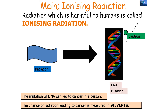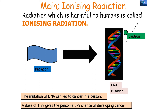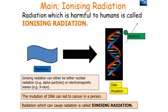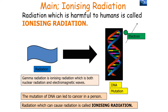The chance of radiation leading to cancer is measured in a unit called sieverts, which measures the risk of harm from exposure of the body to radiation. A dose of one sievert gives a person a 5% chance of developing cancer. Radiation that can do this includes gamma rays, x-rays, and UV rays. Ionizing radiation can either be nuclear radiation like alpha or beta, or electromagnetic waves such as UV or x-ray. Gamma radiation is both nuclear radiation and an electromagnetic wave.